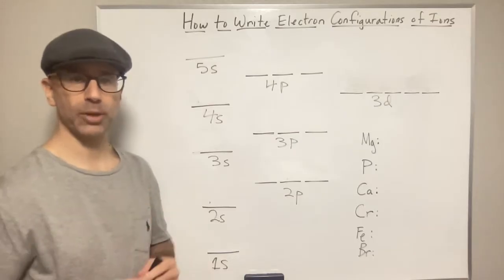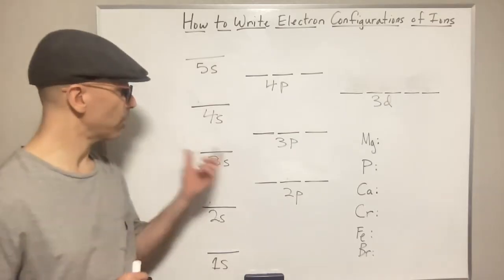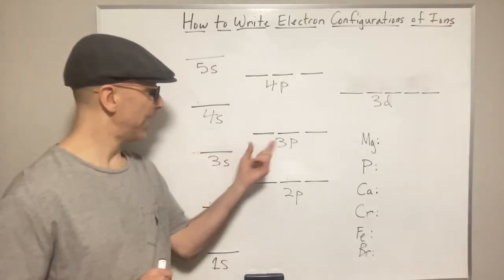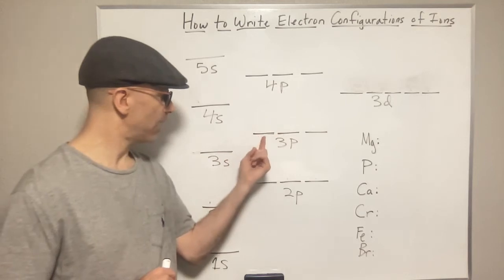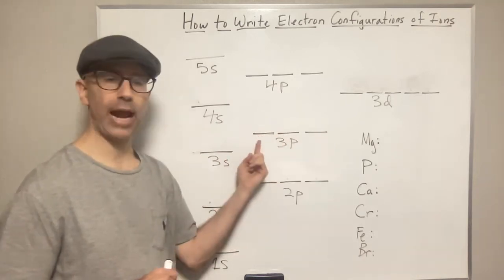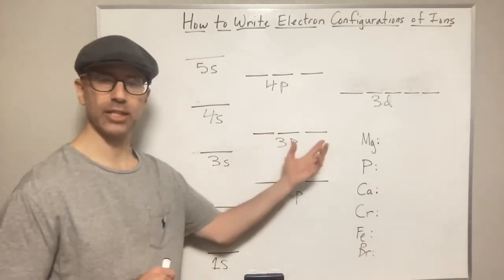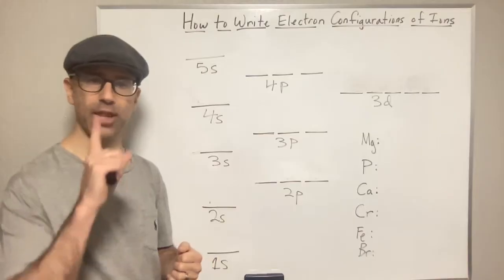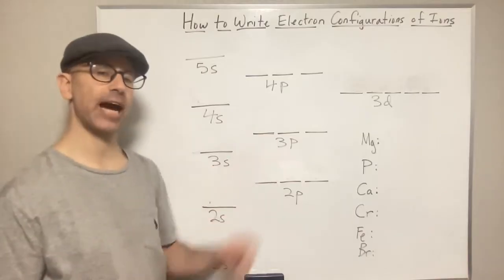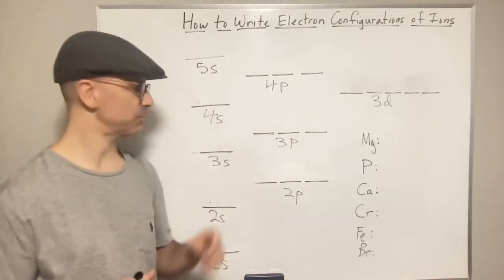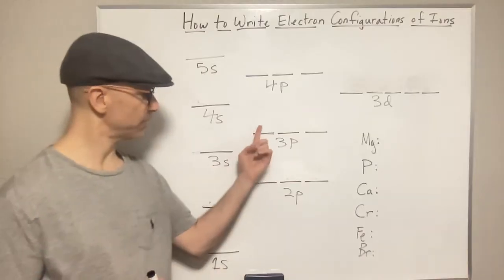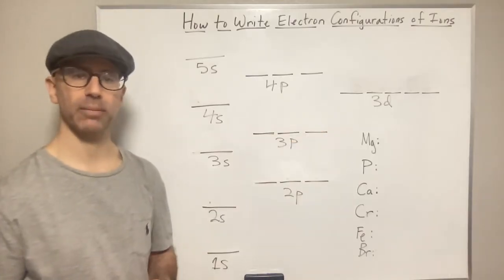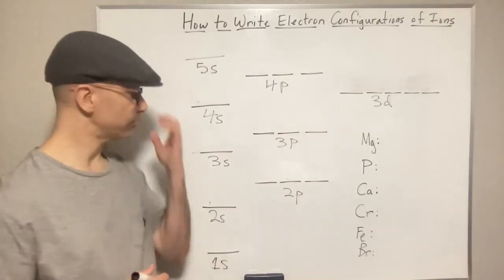Also, I'll be using Hund's rule. Hund's rule says that if you have orbitals of equal energy, when you're adding electrons to each of those orbitals, you add them one at a time and they have to have the same spin — so maybe spin up, spin up, spin up before you start pairing them up.